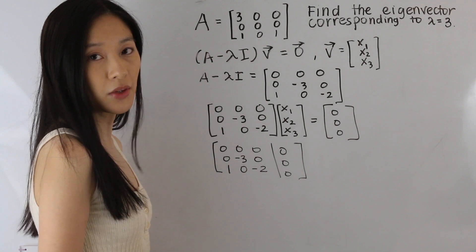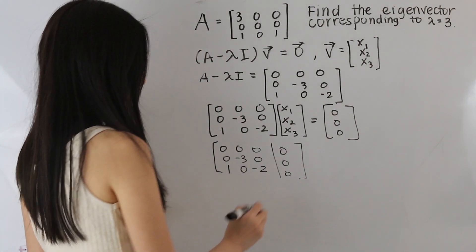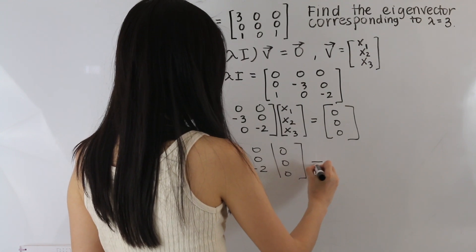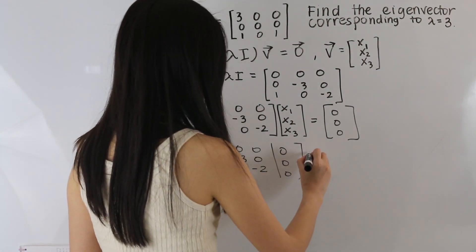And so from here, we're going to want to use row operations to get this into row echelon form. So first, let's start off by interchanging the first row and the third row.